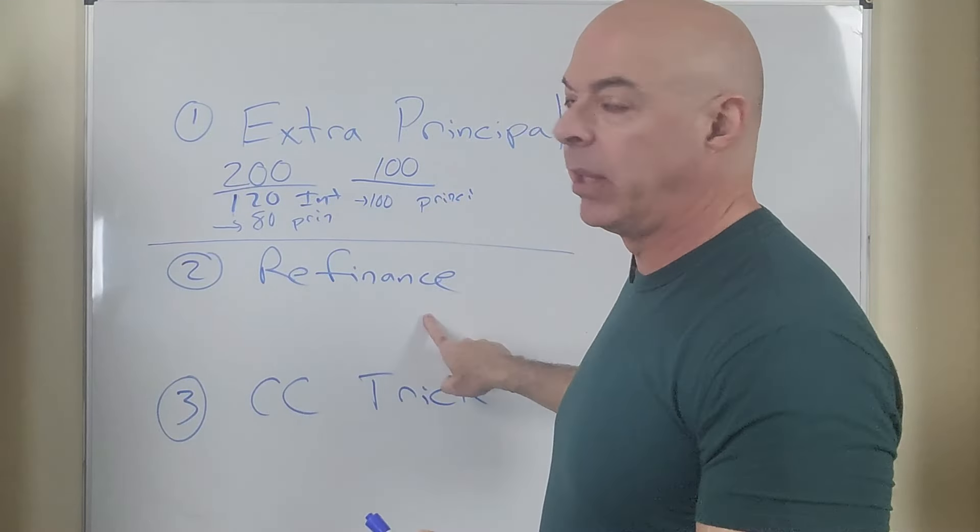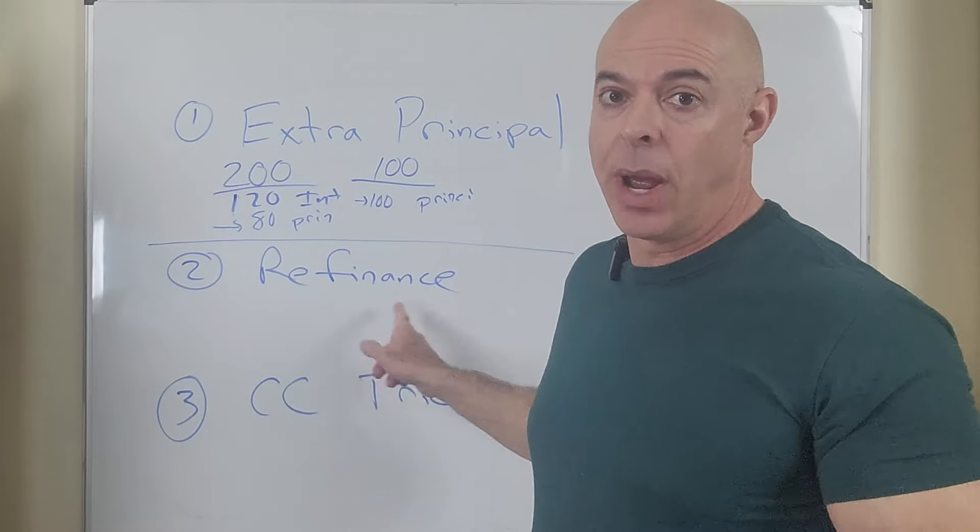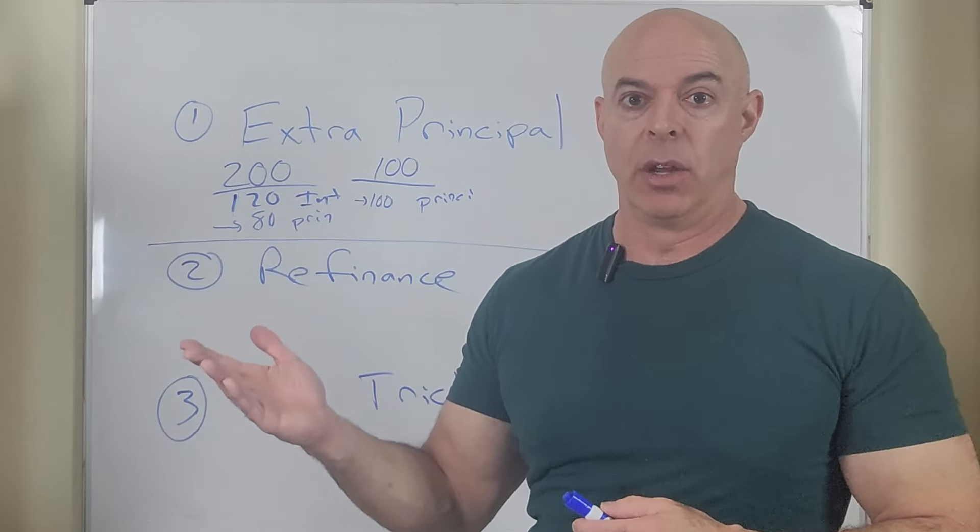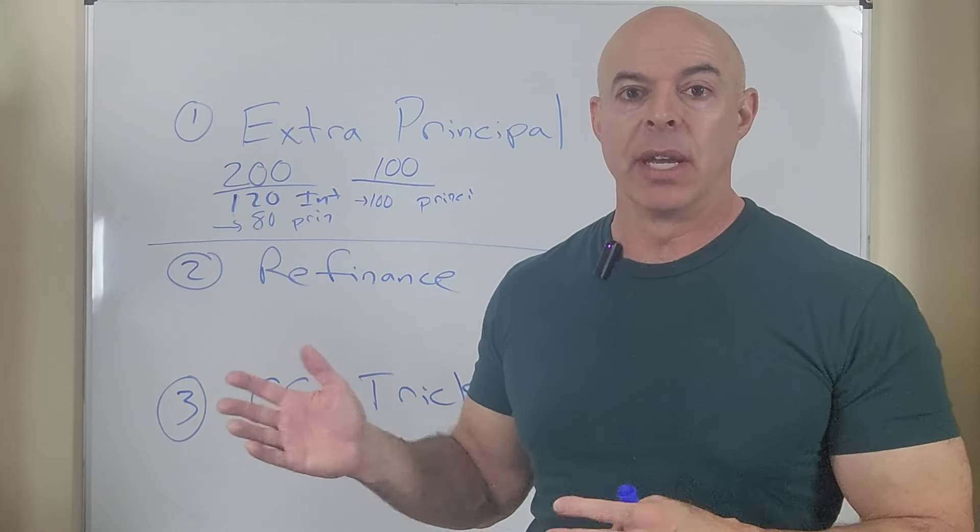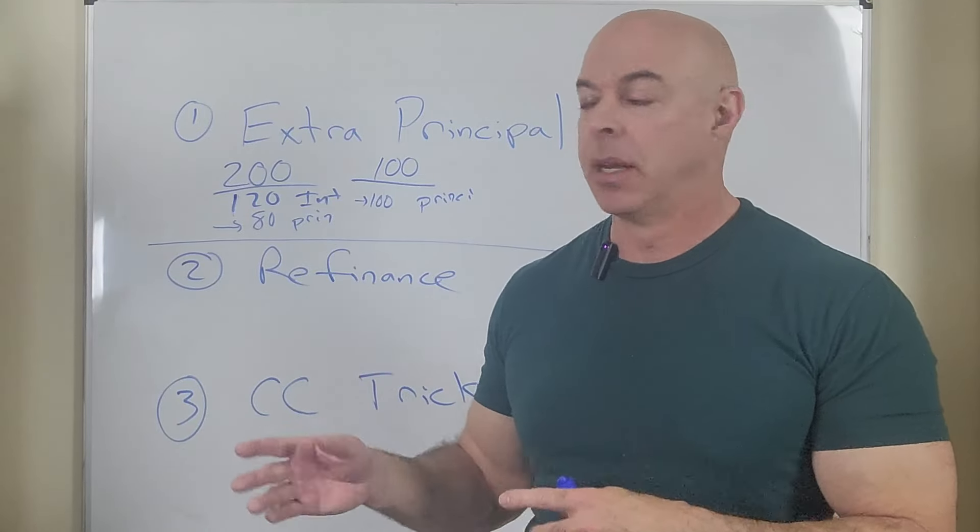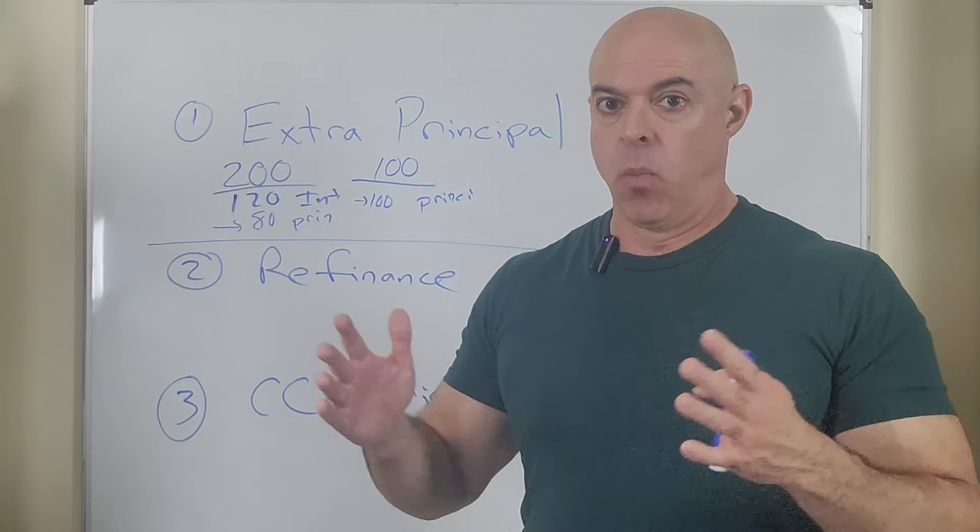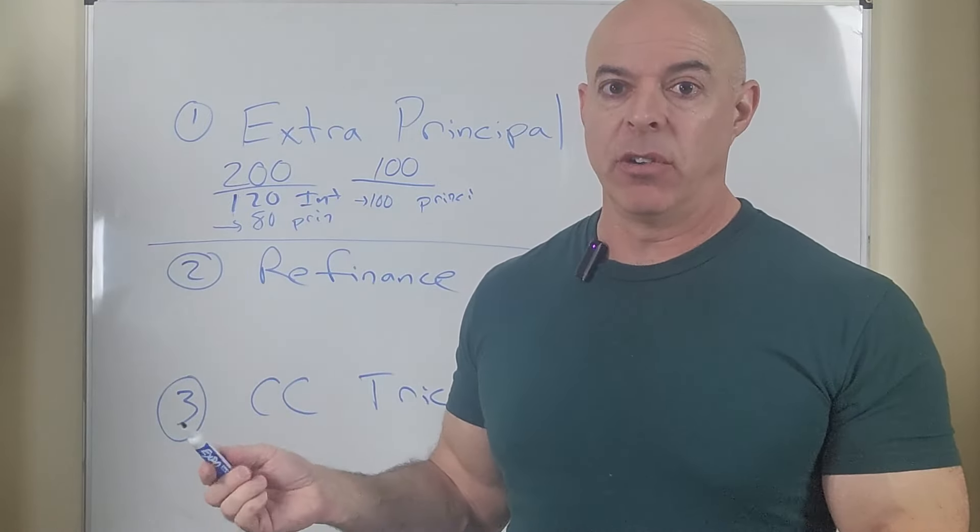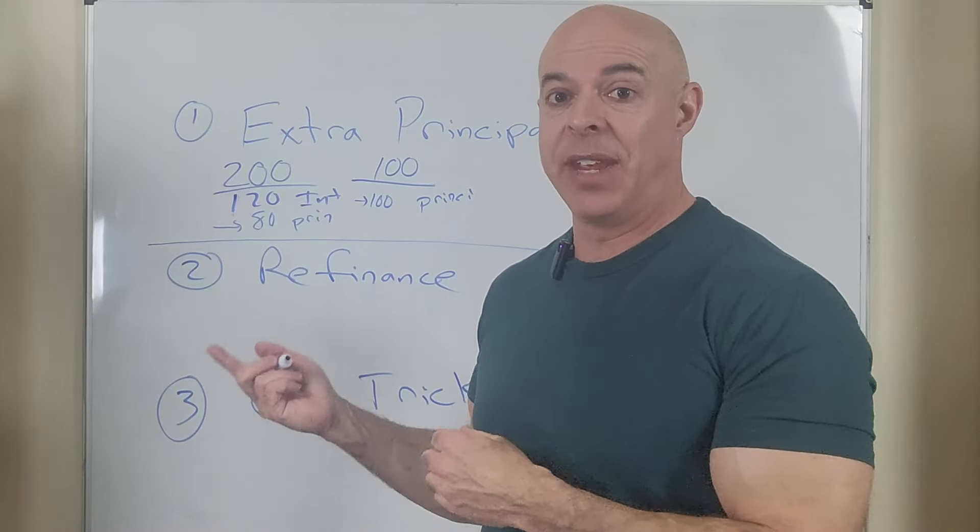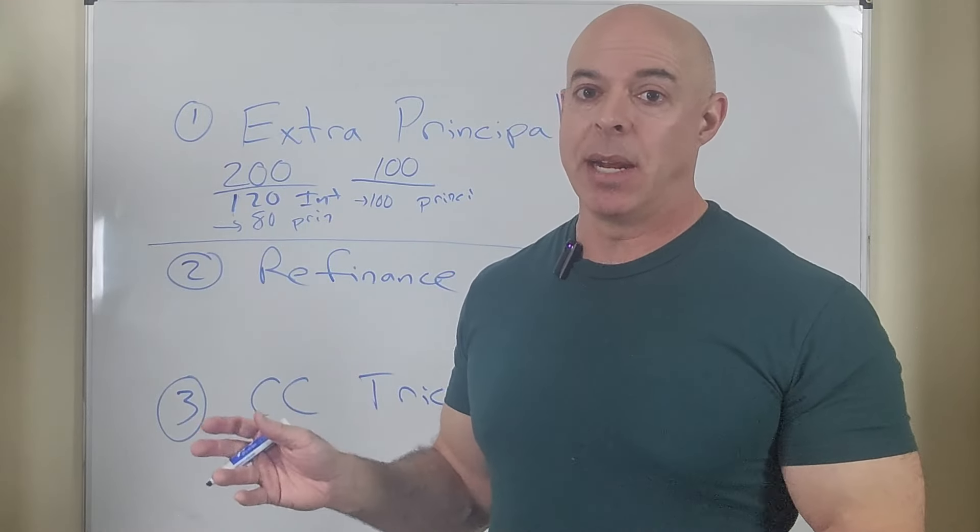Now another option is to simply try to refinance. So if you have one of these loans, variable rate loans at 14% or 15%, you might be able to go out and get a lower rate like an 8% or a 9%. That's well and good. Sometimes if you're looking at maybe only a percentage difference, do the math because there might be a fee to get the new loan and it may not even be worth it.